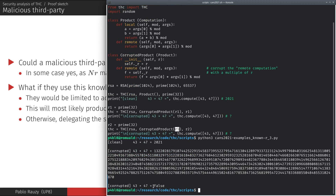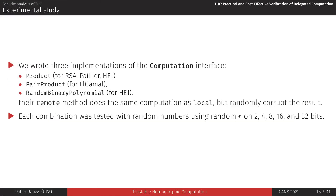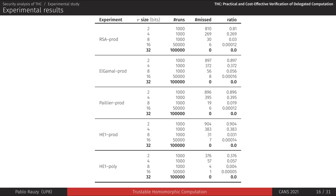In addition to that theoretical study of security, we did an experimental study using the four cryptosystems we implemented. We wrote computations adapted to each cryptosystem with remote methods that systematically randomly corrupt their results, then tested each possible combination with different sizes of the security parameter in order to test our security hypothesis on the probability of non-detection. As we can see, the probability of non-detection is inversely proportional to the security parameter, and dropped to zero in practice when using an R of 32 bits, even after 100,000 attempts.